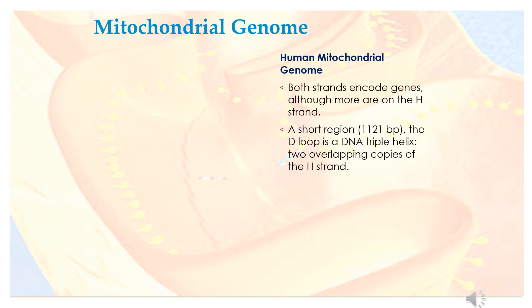Both strands of the human mitochondrial genome encode genes, although more genes are located on the H strand. A short region of 1,121 base pairs forms the D loop — a DNA triple helix structure consisting of two overlapping copies of the H strand.